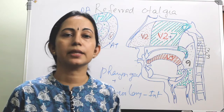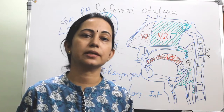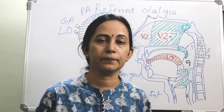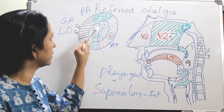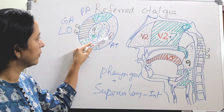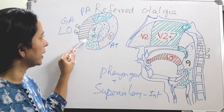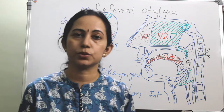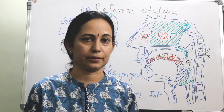To summarize: the definition of referred otalgia is pain in the ear not due to disease in the ear, but in areas having the same dermatomal innervation. The significance is that it can be a presentation of any underlying pathology. The mechanism is the convergence projection theory. The individual nerves are the fifth, seventh, ninth, tenth, and C2 and C3.